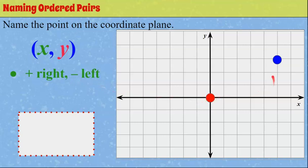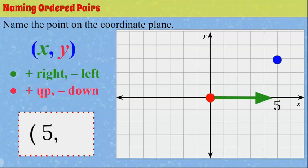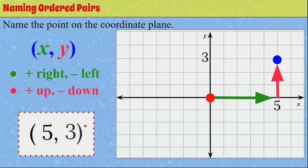The first thing we do when naming a point is start at the origin. To get the x-coordinate, we go right if positive or left if negative. We start at the origin and go right — positive — one, two, three, four, five. So the x-coordinate is five. That gives us (5, ...). Now for the y-coordinate: going up is positive, down is negative. We go up one, two, three. So the y-coordinate is three. The ordered pair (5, 3) names this point — right five on x, up three on y.